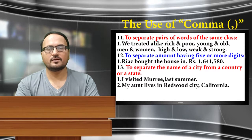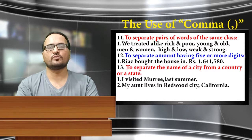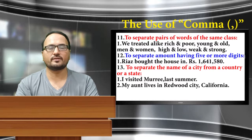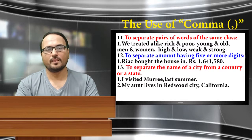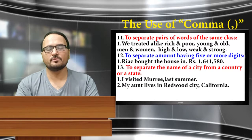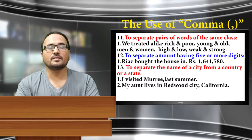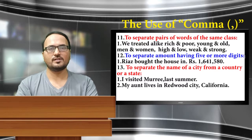The thirteenth use of comma: it is used to separate the name of a city from a country or a state. Example one: I visited Marie last summer. Example two: My aunt lives in Redwood City, California. This was today's episode on the use of comma.